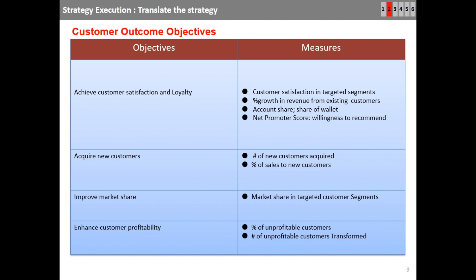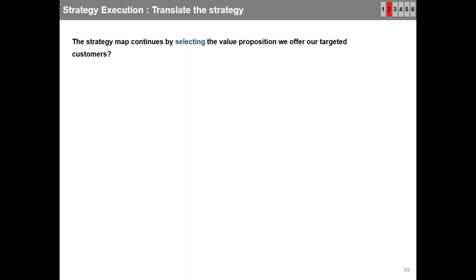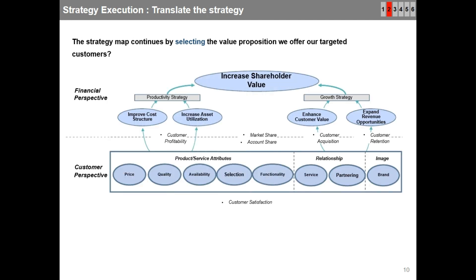We can have more detailed strategic objectives for the customer perspective covering product/service attributes, relationship, and image. Organizations usually offer customers a value which may include price, quality, availability, selection, functionality, service, partnership, and brand. Review what customers perceive about your products, service, or total solution, and select objectives appropriately. Selecting the right objectives is your strategy.